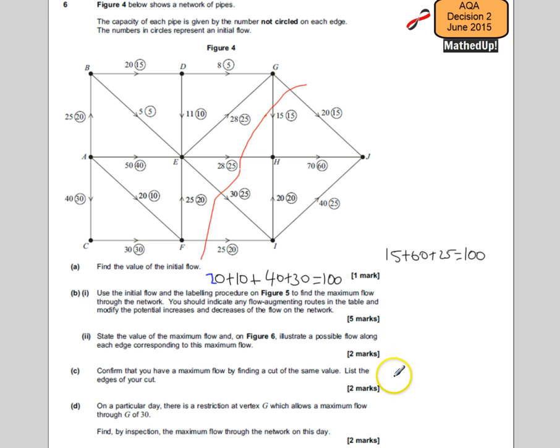Our edges are going to be G to J, G to H, E to H, and you might notice all of these are going from source to sink, E to I, and F to I. These are the edges for part C. That's going to be 20, 15, 28, 30, and 25. Add those together and that gives us 118.